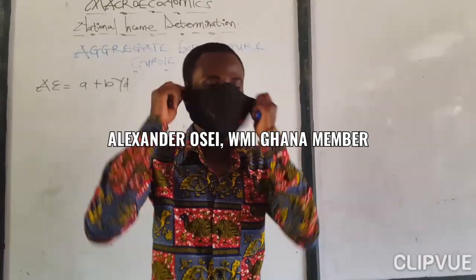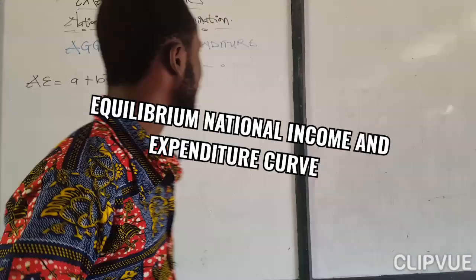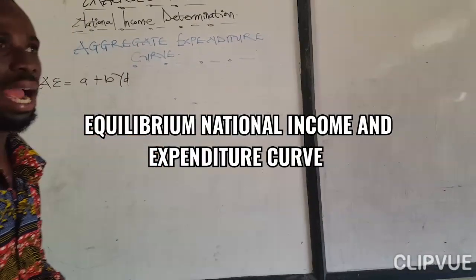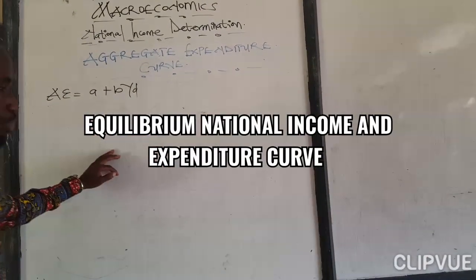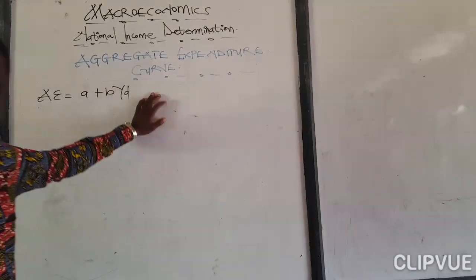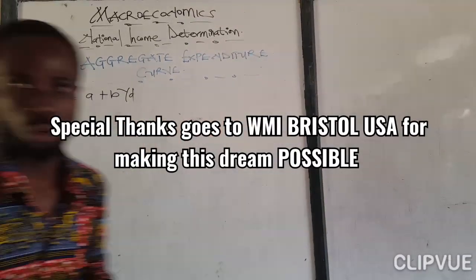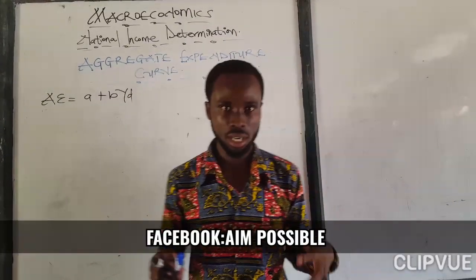So my name is Alexander Osei. Basically we ended with how to get our Equilibrium National Income. Now this lesson we are going to look at the aggregate expenditure curve. Now to represent the Equilibrium National Income on the aggregate expenditure curve.